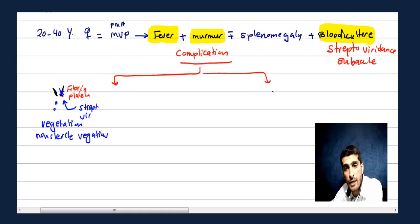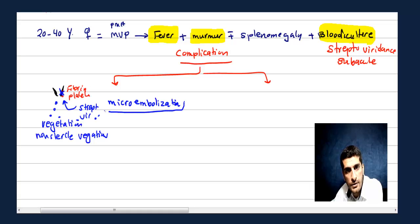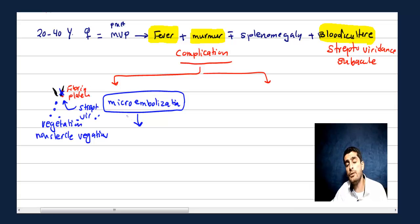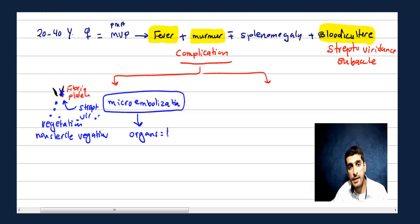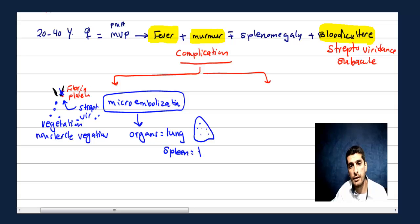The first complication is microembolization. These vegetations can break off and travel to any organ. For example, to the lungs causing septic emboli — you'll see multiple dots in the lungs. In the spleen, you'll get splenomegaly. In the fingernails, call it splinter hemorrhage. In the fingers, it's Osler nodes. On the palm of the hand, it's Janeway lesions.